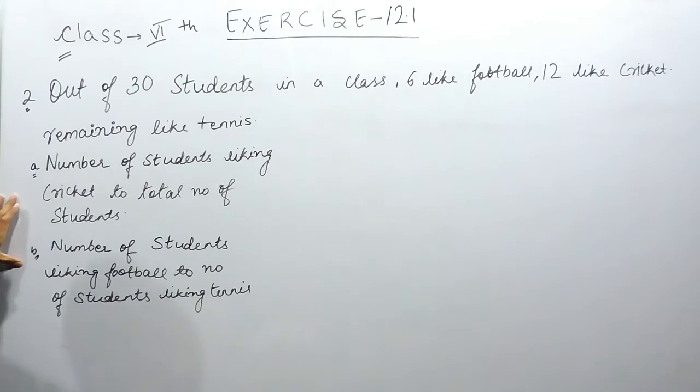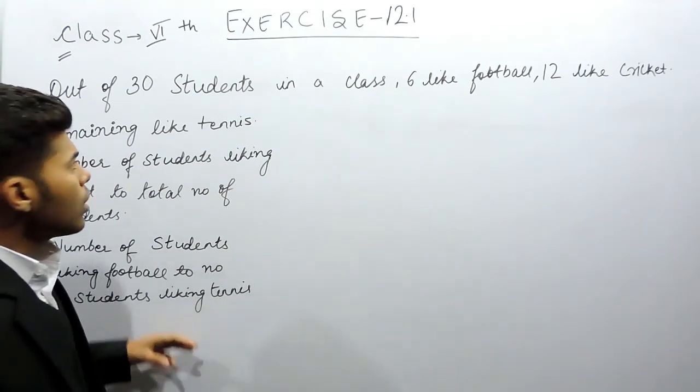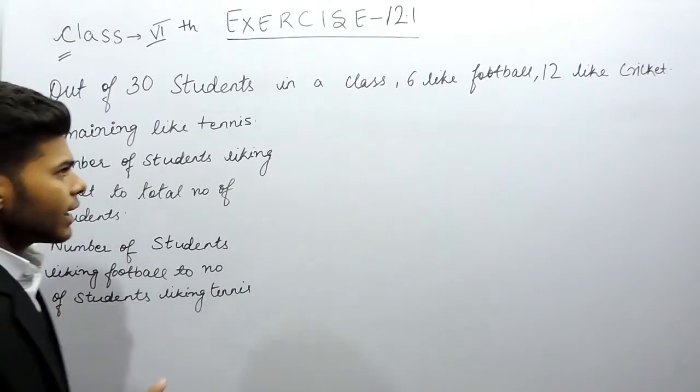So these two parts are given, part A and part B. Part A says number of students liking cricket to the total number of students, and part B says number of students liking football to number of students liking tennis. So first of all, we will find the number of students liking tennis.